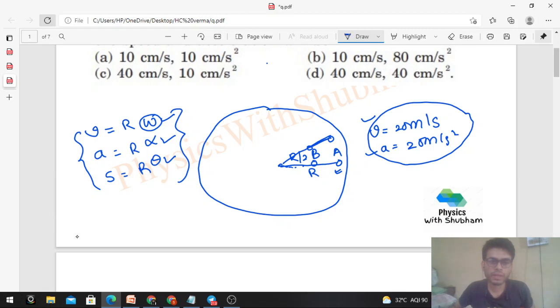So if we take omega constant, V is directly proportional to R because omega is constant for all the particles on this table. Similarly, A will be directly proportional to R. S will be directly proportional to R. So if V is directly proportional to R, if the radius is half, then V will be half. V is the velocity, so it will be 10 cm per second.